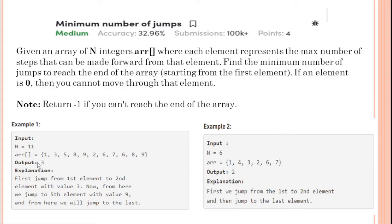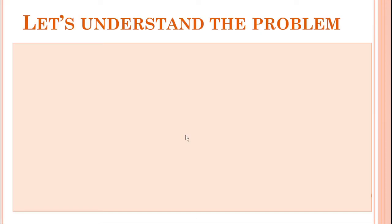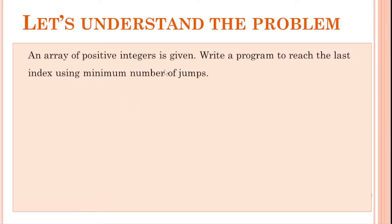The answer is 3. If you have data 1, 4, 3, 2, 6, 7 — if you have a 1, we jump to 4. If you have a 4, you can go 4 jumps: 1, 2, 3, 4. That is how you can reach the end. If you have a 7, you can get there in 2 jumps. That is the minimum number of jumps. We have to write a program to reach the last index using the minimum number of jumps from the first element.